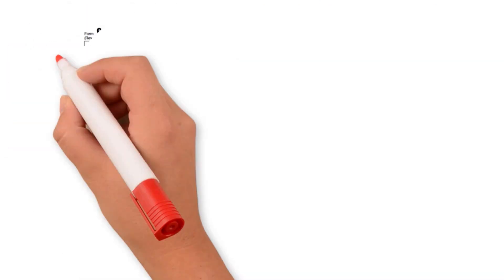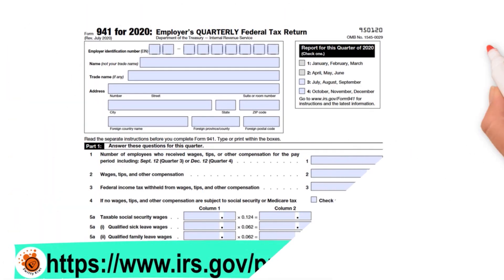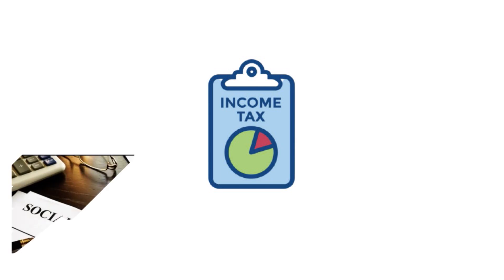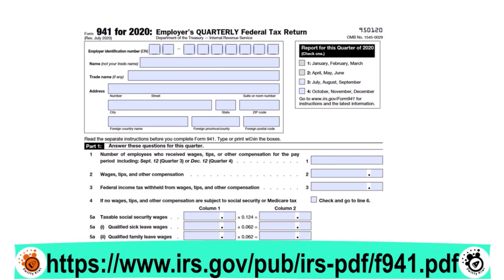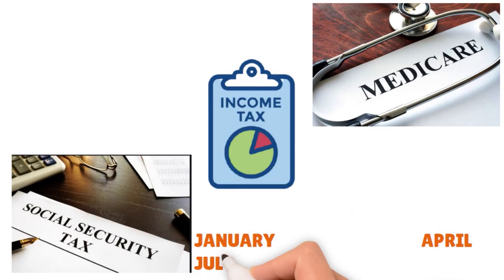What is it? You can see this on the screen right now. We're showing you the form as well as the permanent link to the IRS website where you can find and download it. IRS Form 941 is a quarterly tax form that businesses with employees must file to report income taxes, Social Security taxes, and Medicare taxes withheld from employee paychecks. The form is also used to report the employer's quarterly portion of Social Security and Medicare taxes, and filing deadlines are the last day of January, April, July, and October.